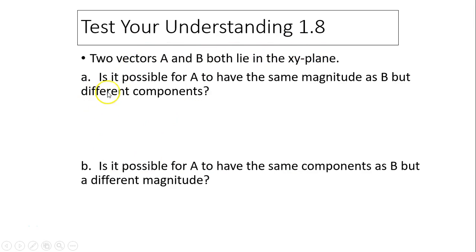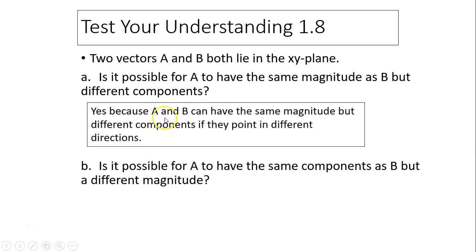Last one, test your understanding. Two vectors A and B both lie in the x-y plane. Is it possible for A to have the same magnitude as B but different components? The answer is yes. A and B can have the same magnitude but different components if they point in different directions. Here's A and B with the same magnitude, but the components are obviously different.